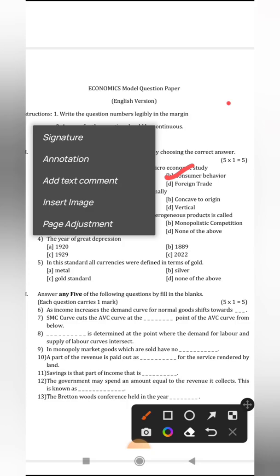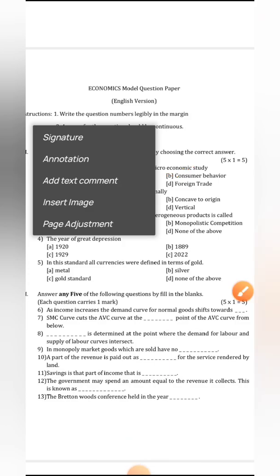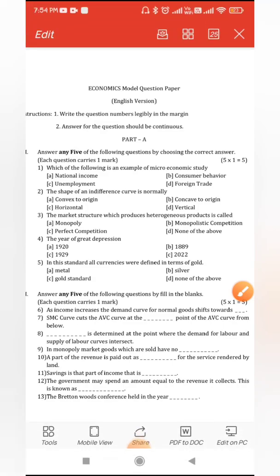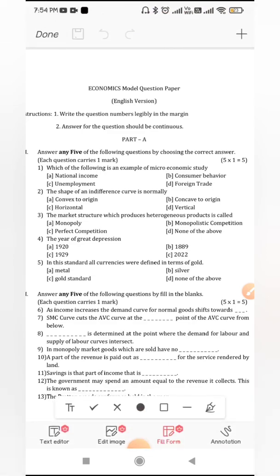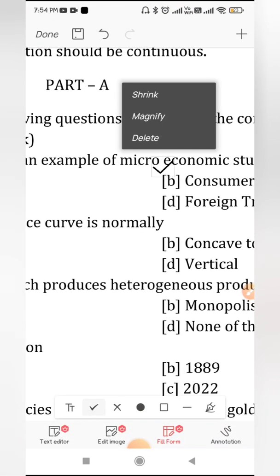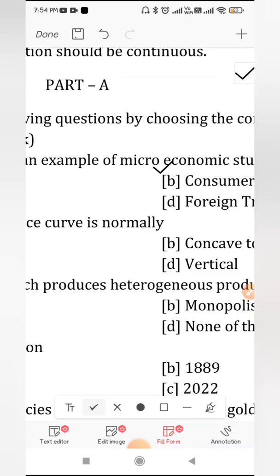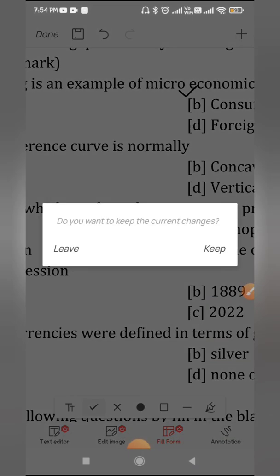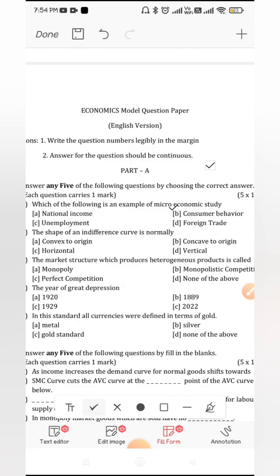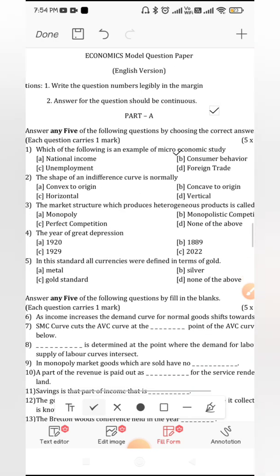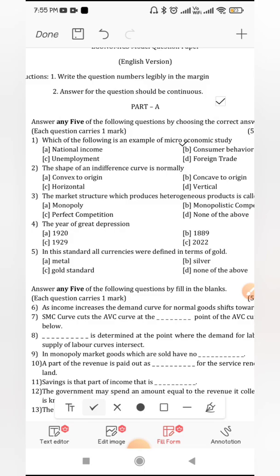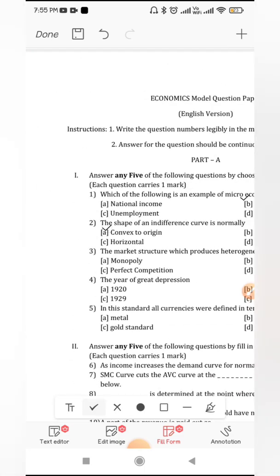After this, second question we will move on. For the second question we will go through. This is B done. Second one is the shape of an indifference curve is always convex to the origin. That is also done.